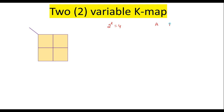Let A and B be the input variables, and let F be the output variable. We have two variables. I will assume A as MSB and B as LSB. A is written along the rows and B along the columns. With respect to rows, the first row is represented as A-bar and the second row as A. With respect to columns, the first column is represented as B-bar and the second column as B.